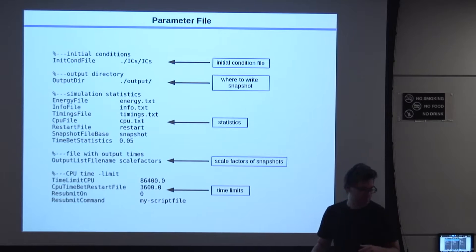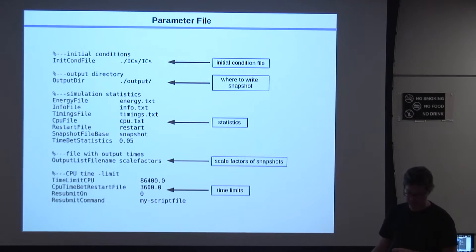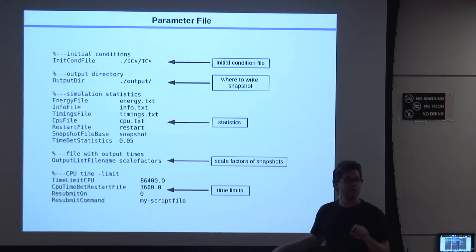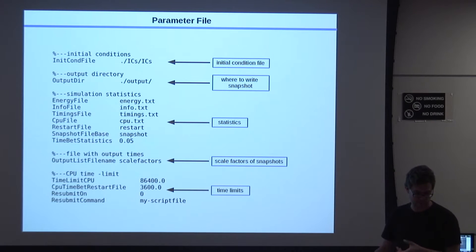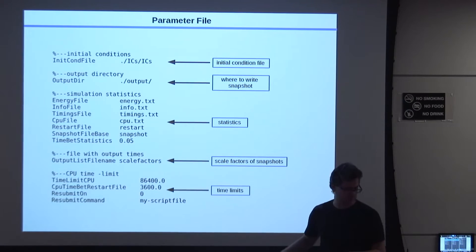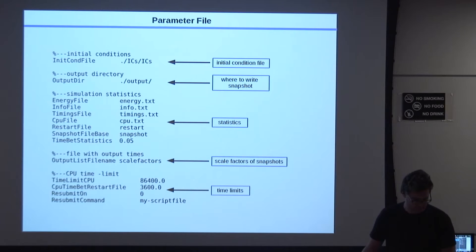Then there are a bunch of monitoring files which store various information about the simulation itself. For example, cpu.txt contains benchmarking of the performance of the code. So how much time it spends in various parts of the calculation, how much time in the tree calculation, how much time in the particle mesh calculation, and so on.